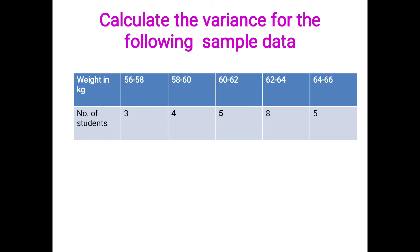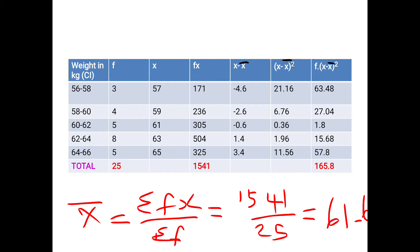Let's calculate the sample variance. First you have to calculate the arithmetic mean: x-bar equals summation of fx divided by summation of f. Write the class intervals and their corresponding frequencies f: 3, 4, 5, 8, 5. Then find the mid value x for each interval: 57, 59, 61, 63, 65. Multiply f into x: 3×57=171, 4×59=236, 5×61=305, 8×63=504, 5×65=325.